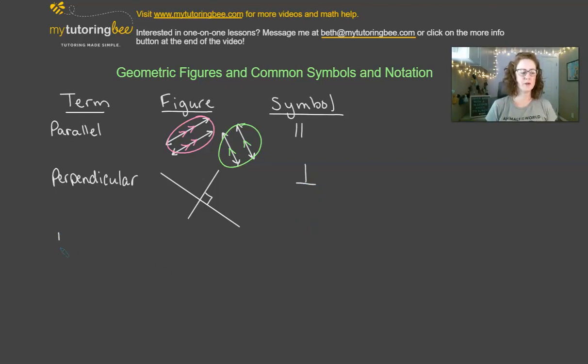And the last term that I want to talk about that has a figure that we can actually draw here is a triangle. So I think we all will know what a triangle is. It is a three-sided figure, and so for the symbol for that we simply write a little small triangle, and then list the letters that are the points that are on the vertices of that triangle. So we would call this triangle LMN.